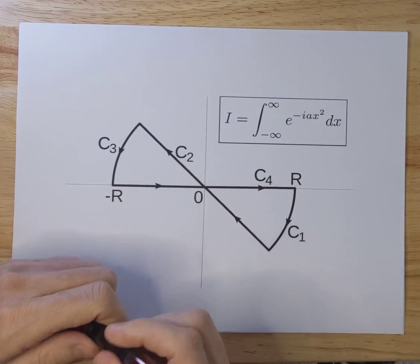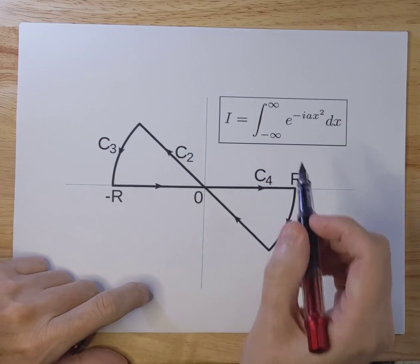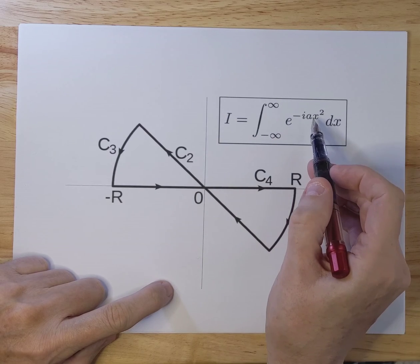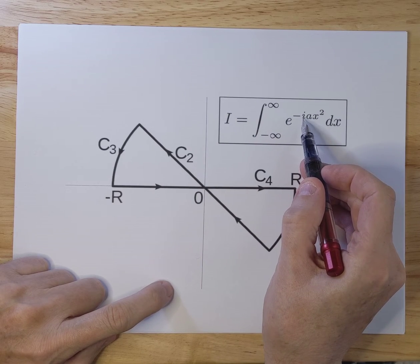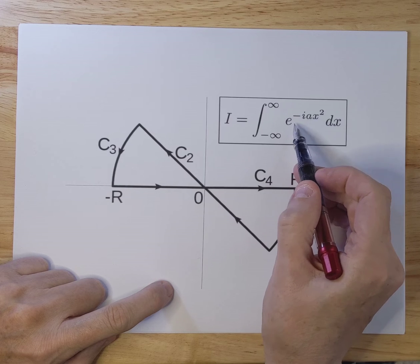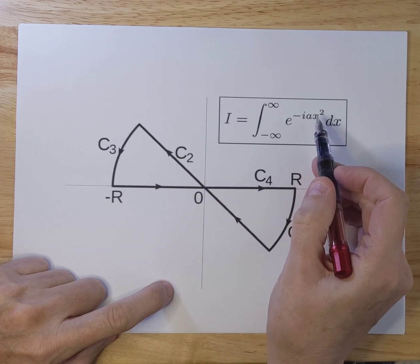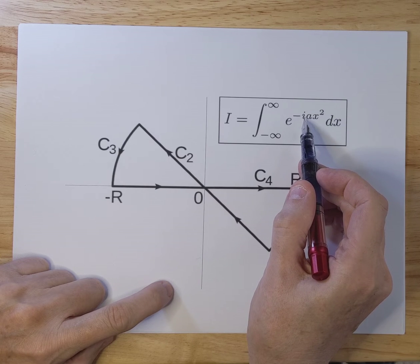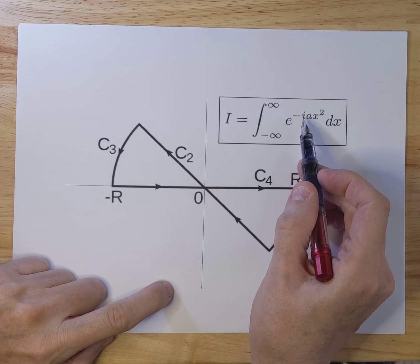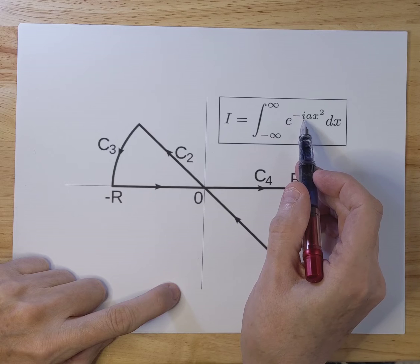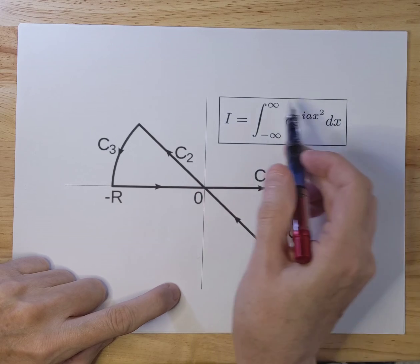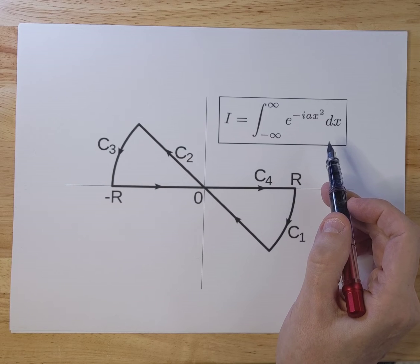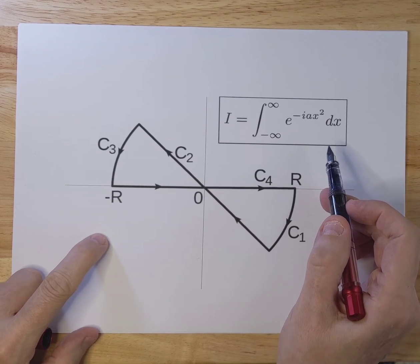Today I'm going to talk about a complex Gaussian integral, and the reason why it's complex is because there's an i here in the exponent. Usually with a Gaussian distribution type integral you just have a x squared and there's no i here. So I'm going to calculate this particular integral which, as a nice bonus, will generate the Fresnel integrals.